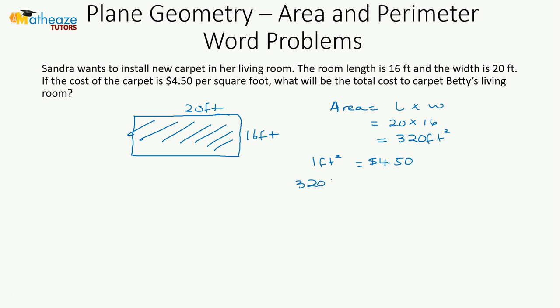320 square feet will be $4.50 per square foot multiplied by 320 square feet, which is going to give us—if you multiply this out—$1,440 as the cost to carpet that living room.